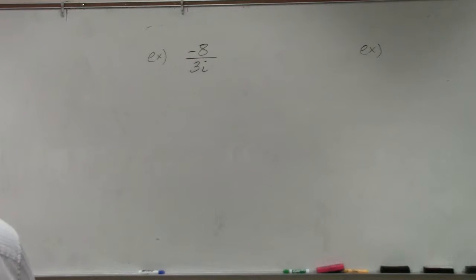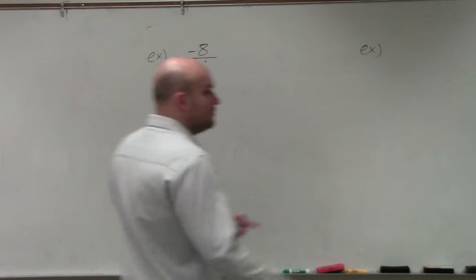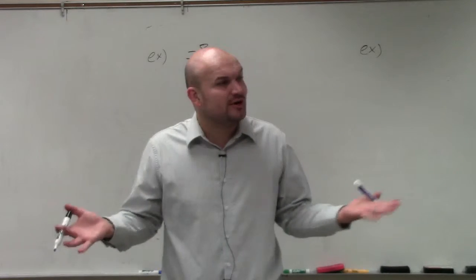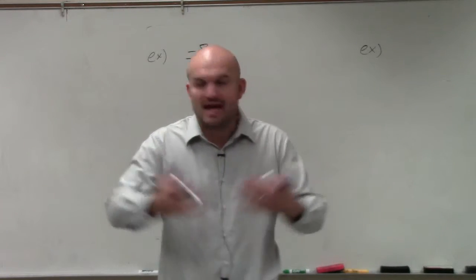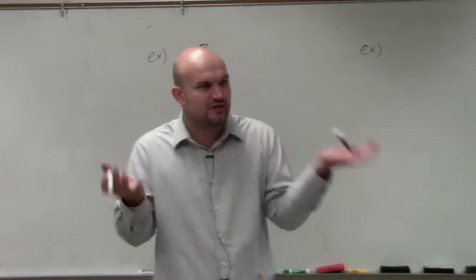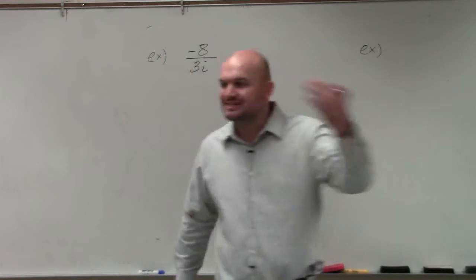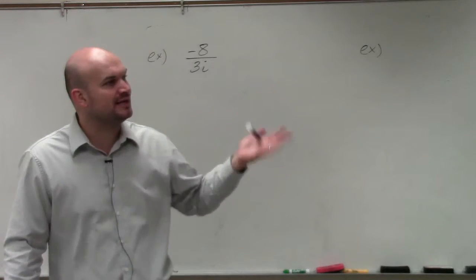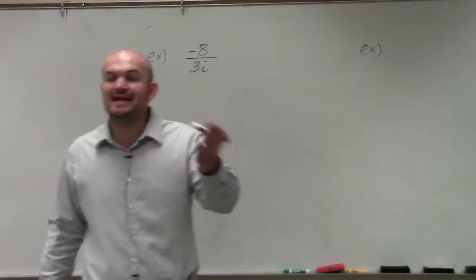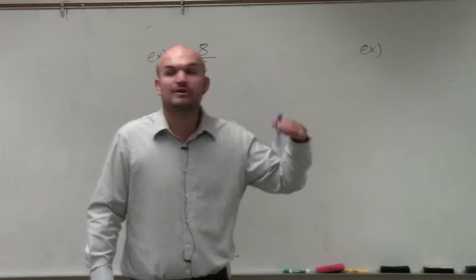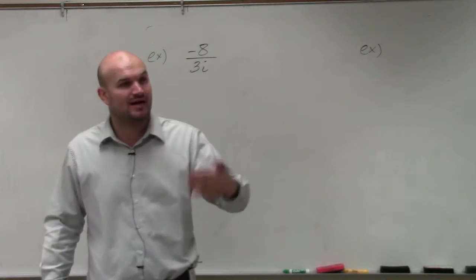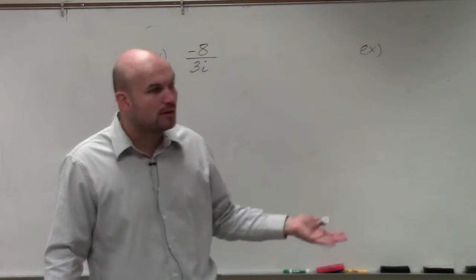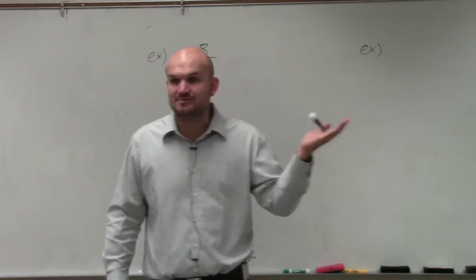Notice that division of complex numbers, we're going to do something a little bit differently. When we did adding, subtracting, and multiplying, basically the operations with complex numbers were exactly the same as with polynomials. We just treated the i as a variable. The only difference we introduced was our imaginary unit i. When we obtained an answer like i squared, we represented i squared as negative 1. We also introduced the standard form of a complex number, which was a plus bi.